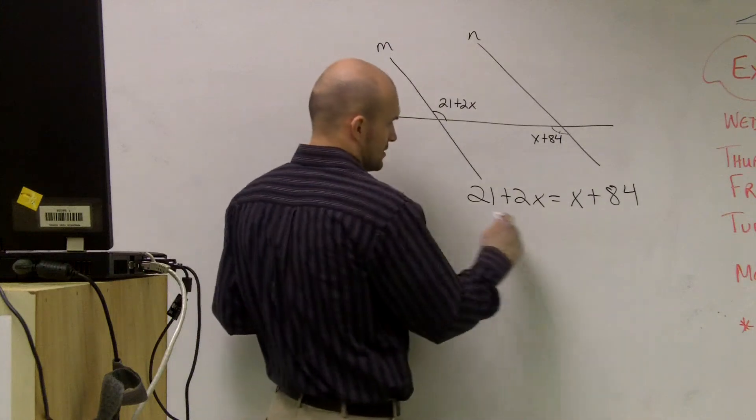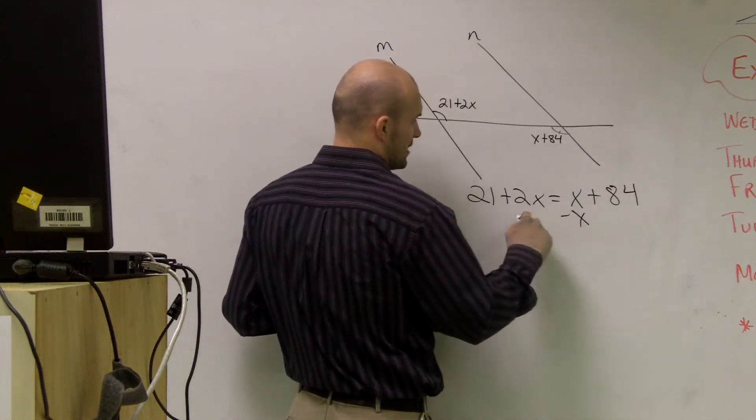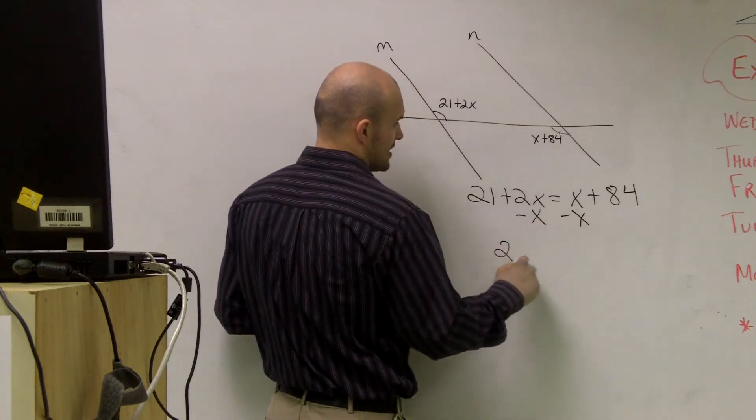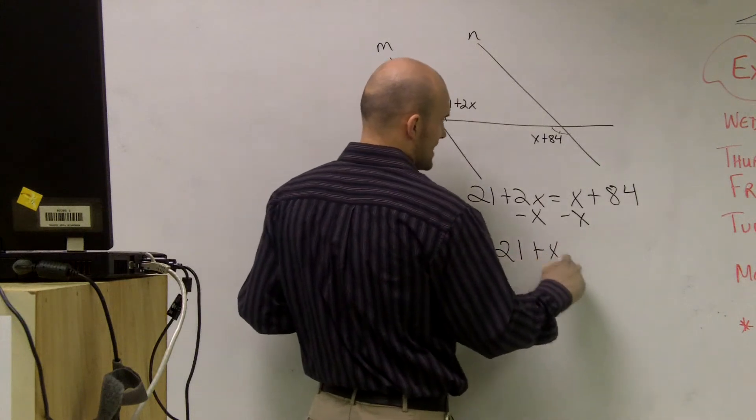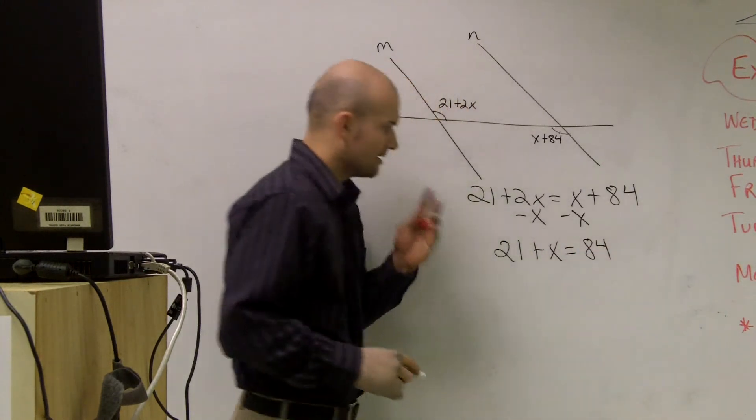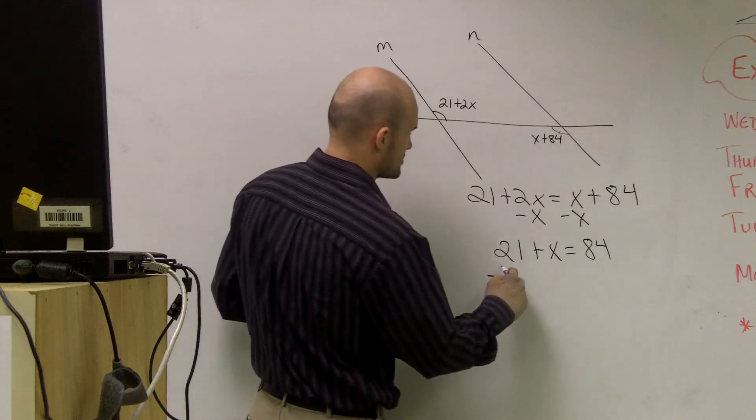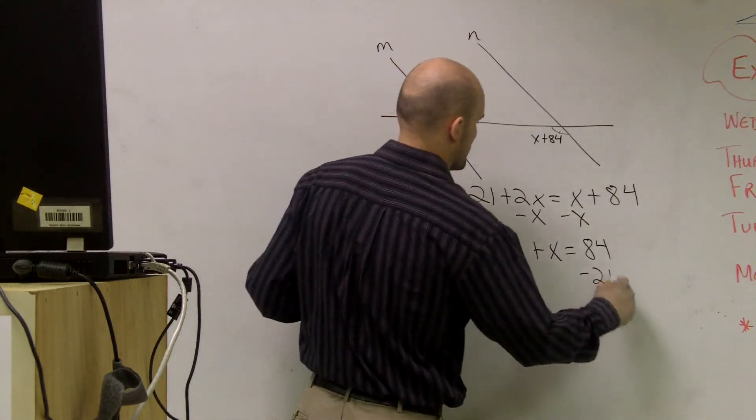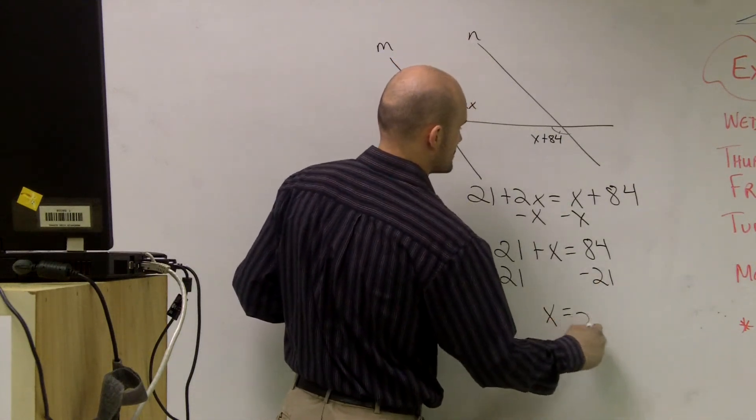I'm going to have to solve for x. First thing, I'll get my variable on the same side. So I have 21 plus x equals 84. Then I'll solve for x. I subtract 21, and I get x equals 63.